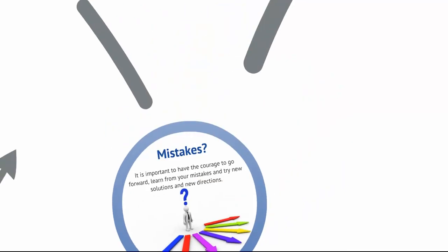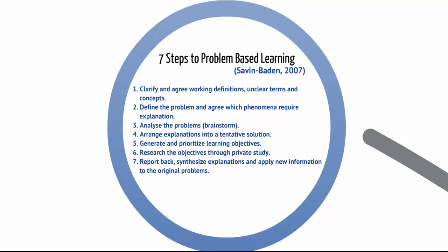For the purposes of our learning in this course, we'll be using some of these basic principles from Savin-Baden. Clarify and agree on the working definitions of terms that are unclear to you. Define the problem and agree what requires explanation. Brainstorm and analyze the problem and arrange some explanations into a tentative solution. Prioritize your learning objectives, take a look at those objectives in self-study, and then report back to your group.